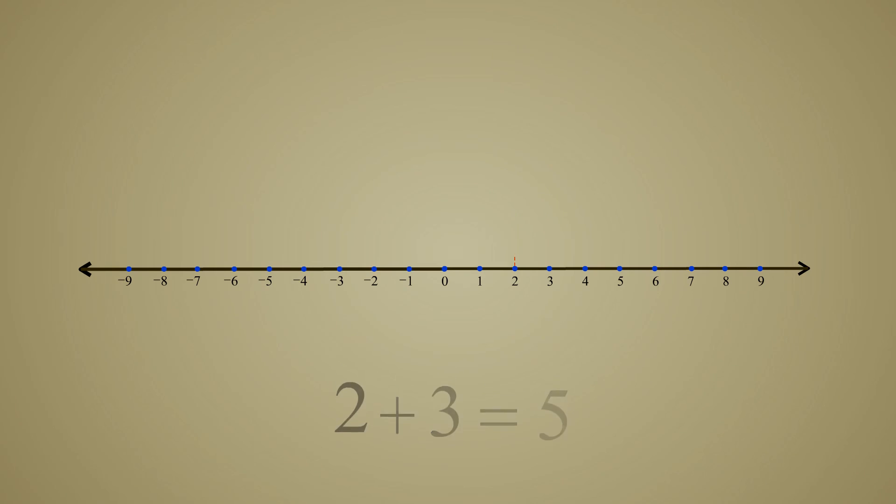The distance from a number to the origin is called its magnitude or absolute value. For instance, the numbers positive 3 and negative 3 have opposite signs but the same magnitude since they are located the same distance from the origin.